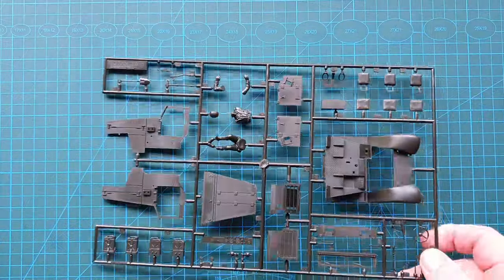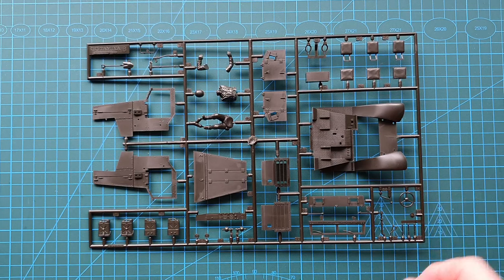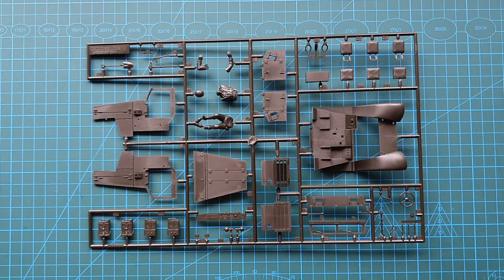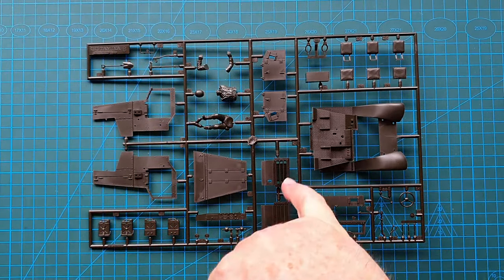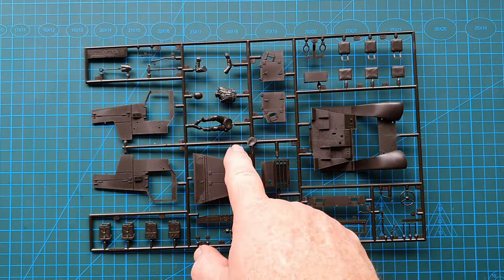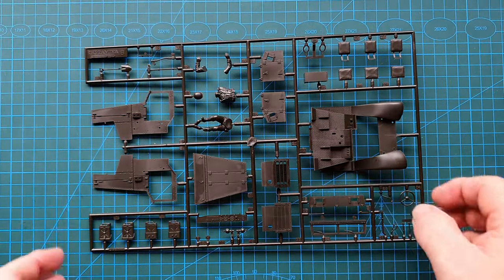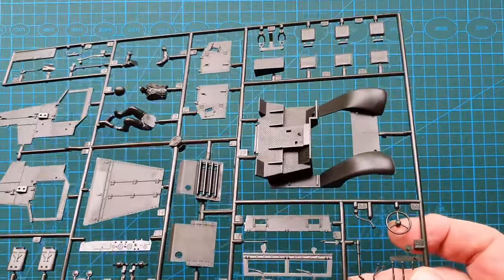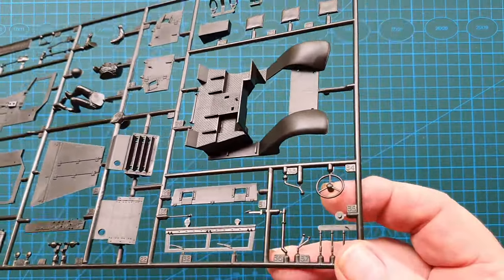Next we'll have a look at this one. This, of course, is the front of the half-track. There are your two different types of grills, your instruments, your driver figure, seats, and other accessories, steering wheel.